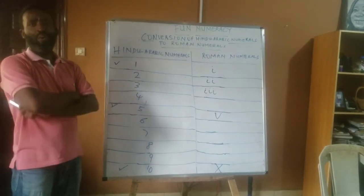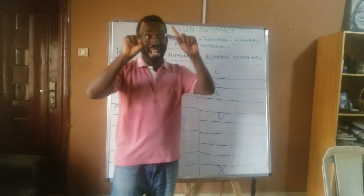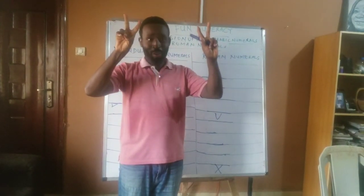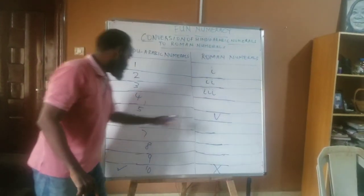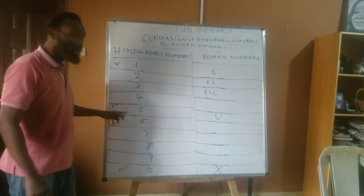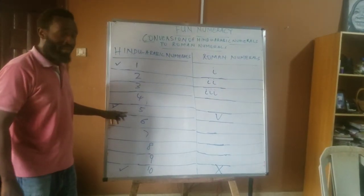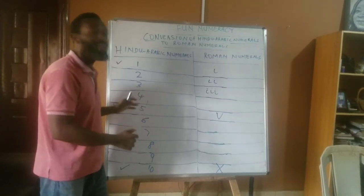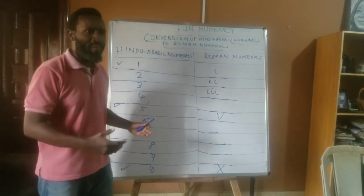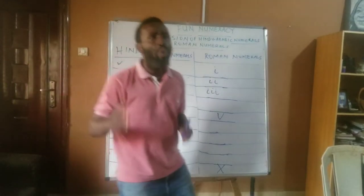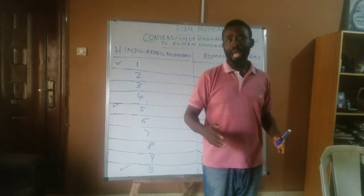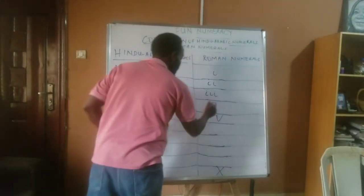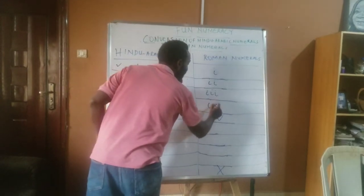How do we handle 4? Do we say four I's? No. Don't forget that we have the magic letter V for the number 5. That number 5 now determines what number 4 is going to be. Number 4 is one number before we get to number 5, and that is I before we get to V. And that gives us IV.